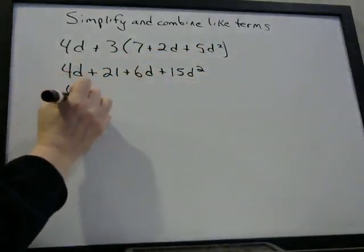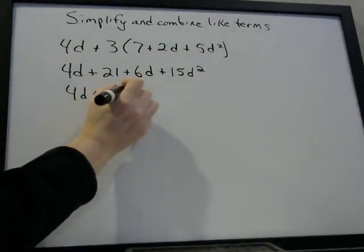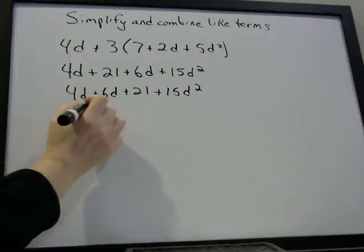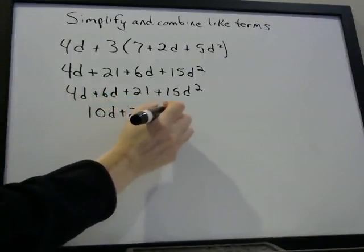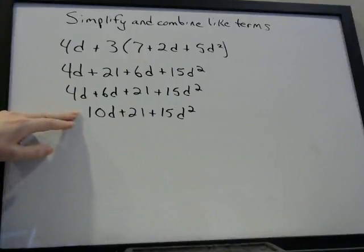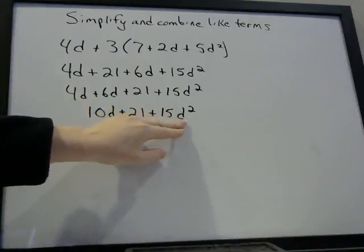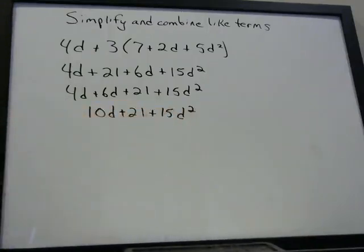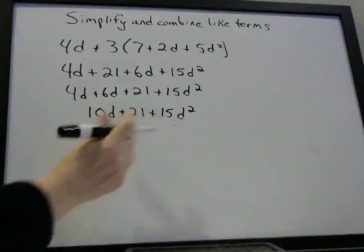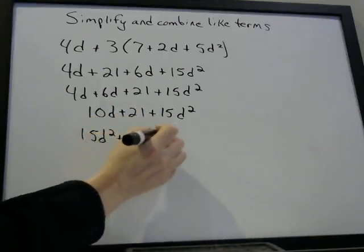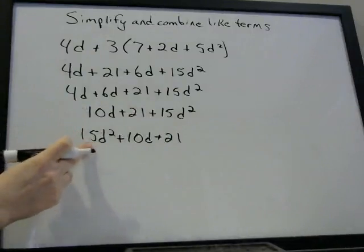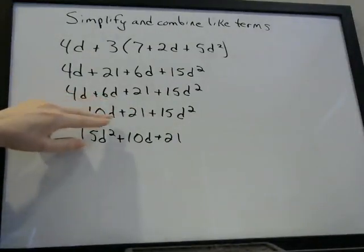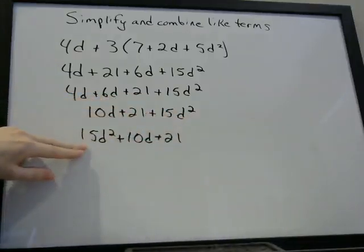We're going to put like terms together. Here's a D and here's a D, so we can combine these: 4D plus 6D is 10D. We cannot simplify this any further — this is a D and this is a D squared; they're not the same thing, so you can't combine them. The answer is 10D plus 21 plus 15D squared. Sometimes they write squared units in the front, so because of the commutative property we can write these in any order. The key thing is: you can add things that have a D on them, but you can't add a D squared to a D.